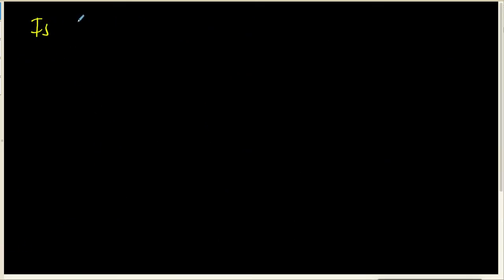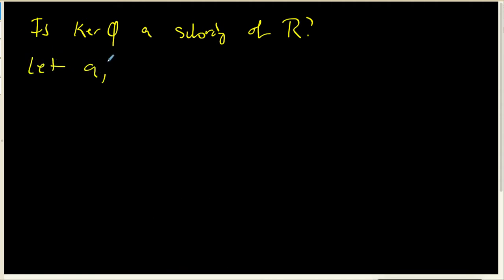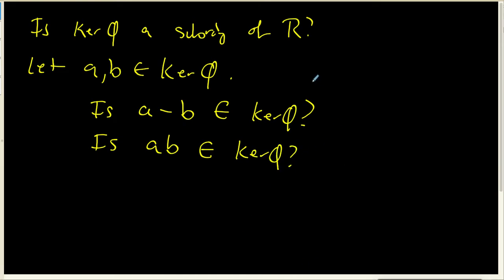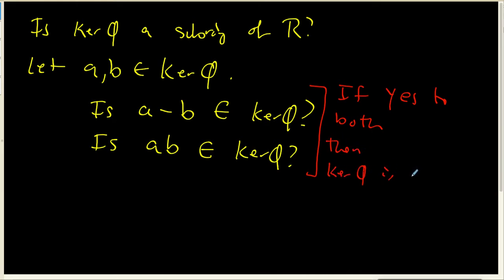The question is: is the kernel of phi a subring of R? We need to take two elements A and B inside the kernel and check whether A minus B belongs to the kernel, and whether the product A times B belongs to the kernel. If the answer to both is yes, then the kernel of phi is a full-fledged subring of R.